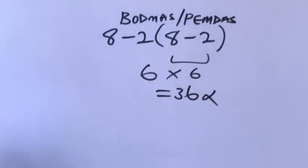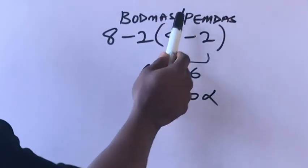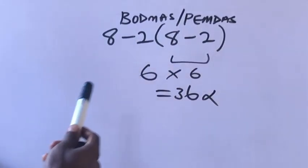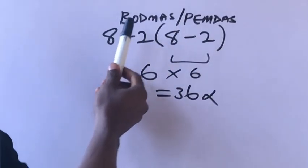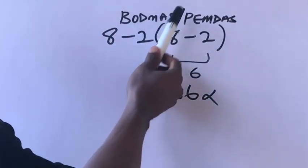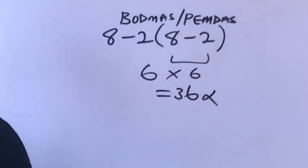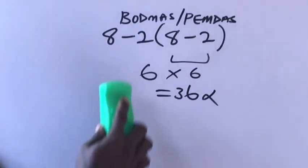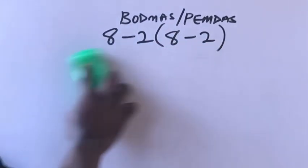We have to first of all solve for the parenthesis bracket, then followed by addition, multiplication, addition and subtraction. So now our answer will look like this.